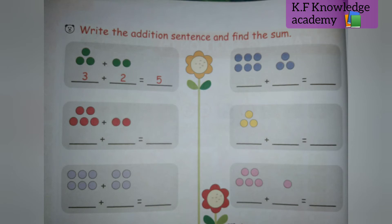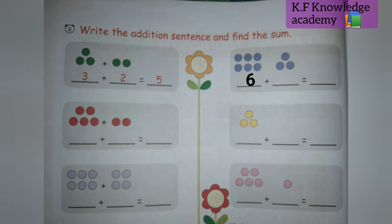Next question: write the addition sentence and find the sum. There are some dots. First one: there are three green dots plus two green dots, so three plus two is equal to five — the answer five is given. Next: there are six blue dots, so we write six, plus three dots, so we write three. Six plus three is equal to nine, so we will write nine.